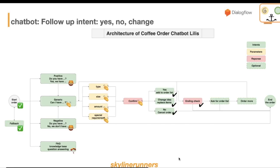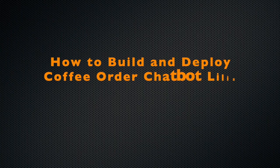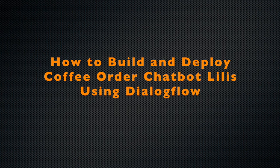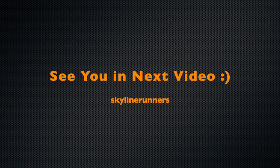To recap: today we built follow-up intents to handle customer responses — 'Yes' to confirm the order, 'No' to cancel the order, and 'Change idea.' We also added an ending check: 'Is that everything?' In the next video, we will build a shopping cart intent so when the customer asks 'What do I have so far?' this intent will be able to handle it. Comment below if you have any questions, and share the video with your friends who are interested in building chatbots. See you in the next video!